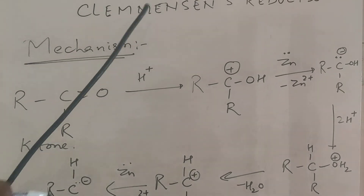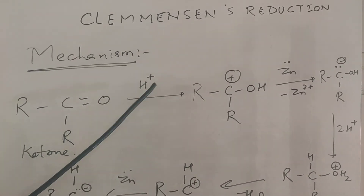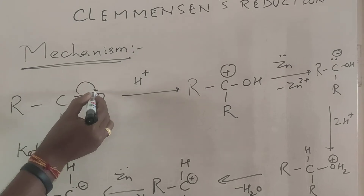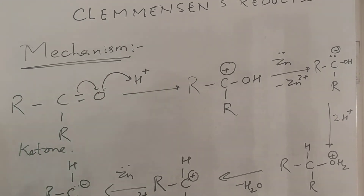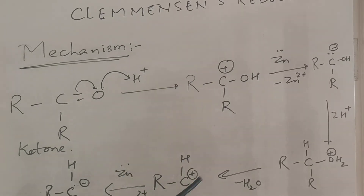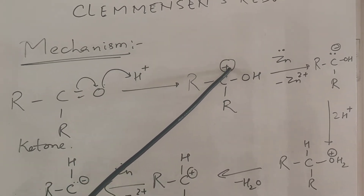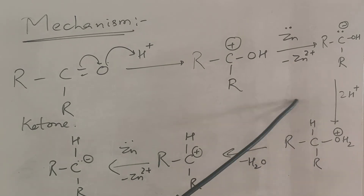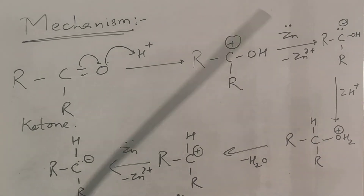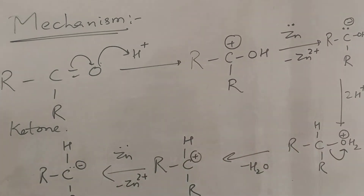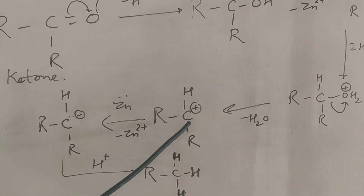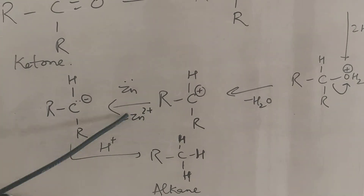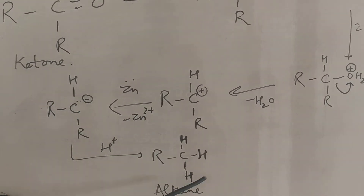Now let's see the mechanism of Clemmensen reduction, considering a ketone. H+ from the acid protonates the oxygen, forming a carbocation with an OH group. Zinc donates electrons to this positively charged carbon, making it negatively charged. A proton attacks to form a protonated alcohol. Elimination of one water molecule forms a carbocation. Again zinc donates electrons, zinc comes out as Zn2+, and a proton attacks to give the alkane.